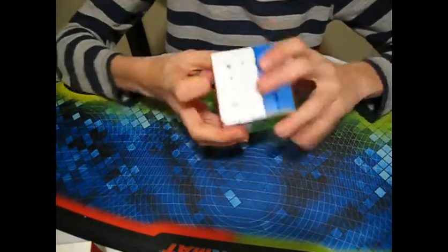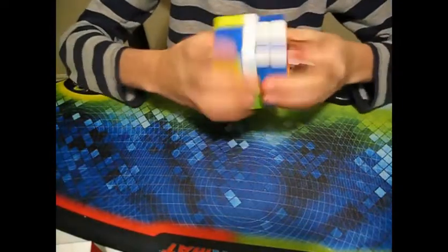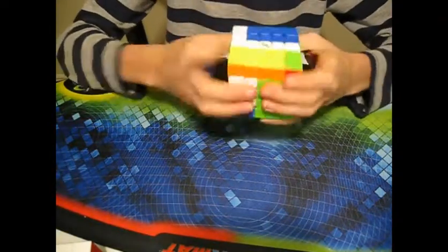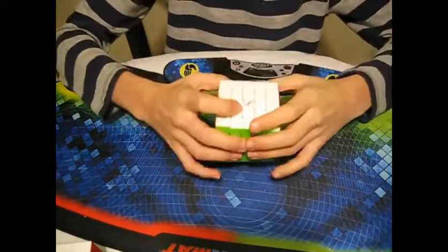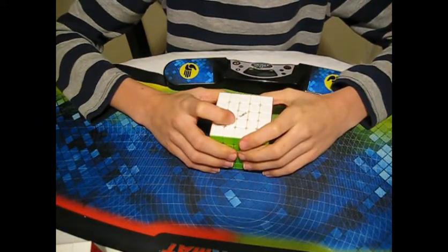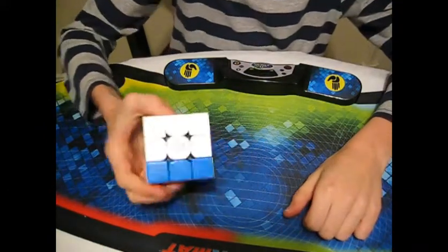For 5x5, I have here the Valk 5M, which is the main speedcube of most 5x5 solvers. My goal this year for 5x5 is to be Sub-2 minutes.